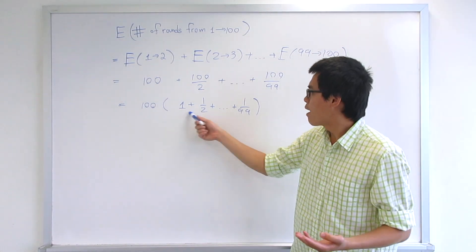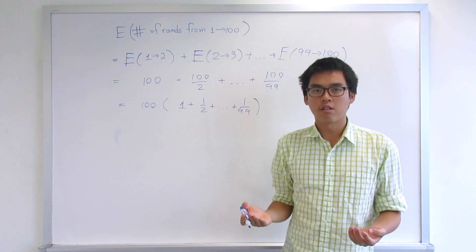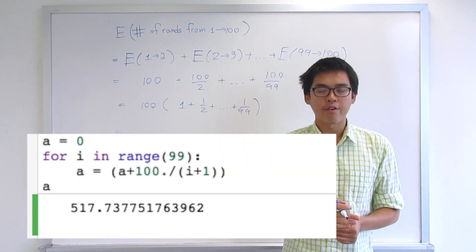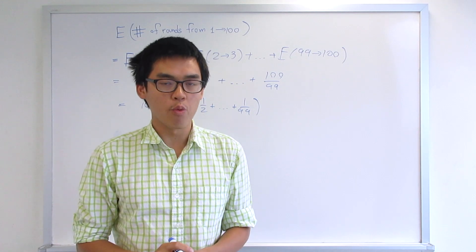So after this, there's not much we can do from here except using a calculator. And after using a calculator, the answer turned out to be something like 517.7, which is pretty darn close to the result we get from the simulation.